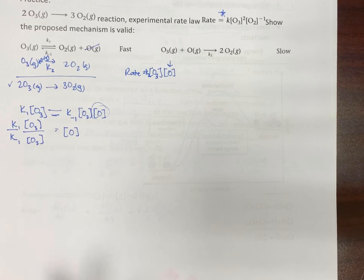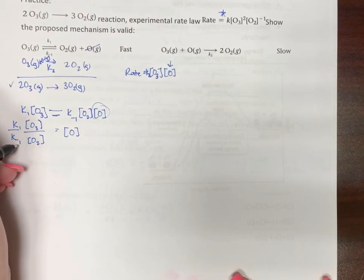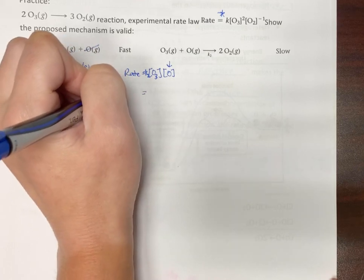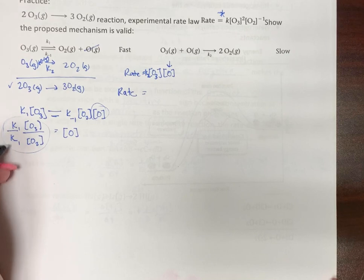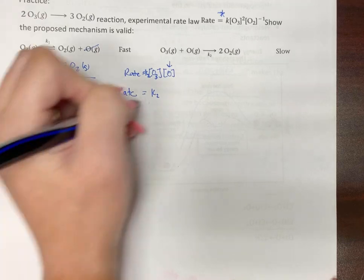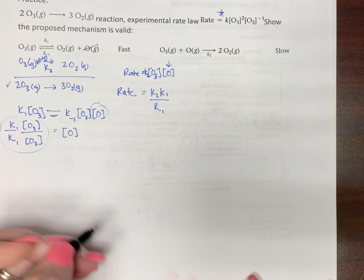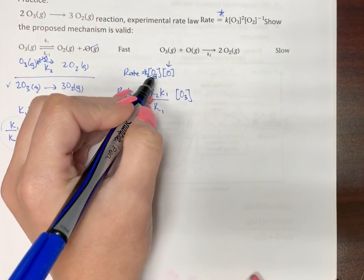Alright, this is just algebra. We're just plugging and chugging and substituting. We're substituting weird things that you probably haven't done before, but that's okay. So now let's substitute for oxygen this. Okay, so equals, so rate equals, so let's keep our K's together. So here we have K2 and then we have K1 and we have K negative 1. Then we have O3 because we haven't plugged and chugged not so much yet.